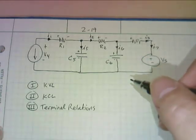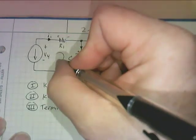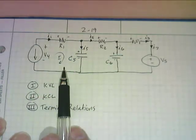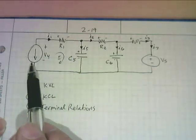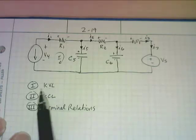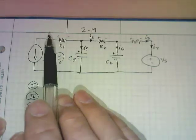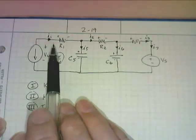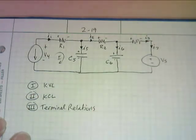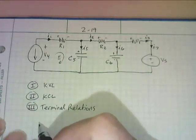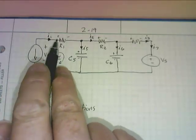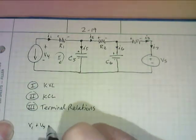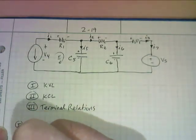Now when we do Kirchhoff's voltage law, call this mesh number one — we don't pay attention to the directions of the currents. What we're actually doing is just going around looking at the voltages. Mesh direction and current directions do not have to match; they don't influence each other. So let's write the Kirchhoff's voltage laws. Going through mesh one we're going to have V1, plus V5, and then coming up here minus V4, equals zero.